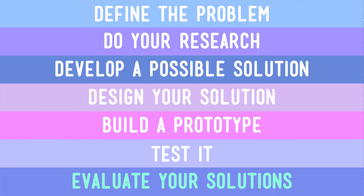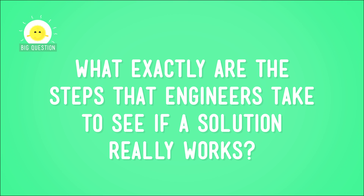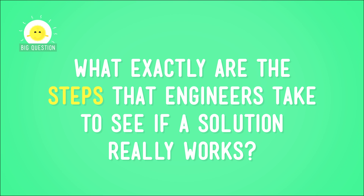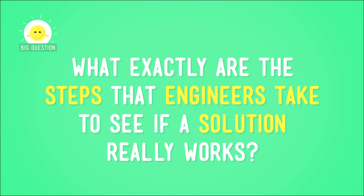We know that engineers solve problems, and that part of the process engineers use to solve problems involves deciding on and then testing a solution. So what exactly are the steps that engineers take to see if a solution really works?